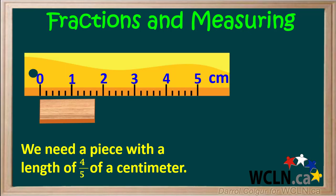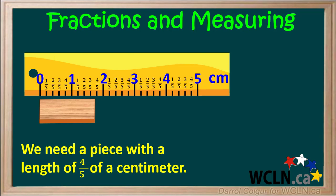We can bring in a ruler like this. We see that on this ruler each centimeter is divided into five parts, so we can make some fractions with a denominator of five. The distance between each small tick is one-fifth of a centimeter, so we can label the ticks like this.